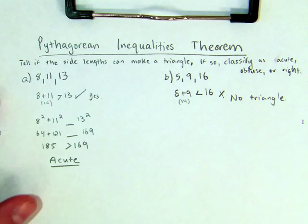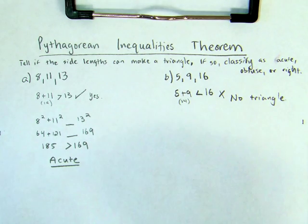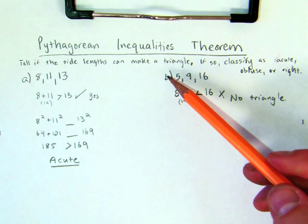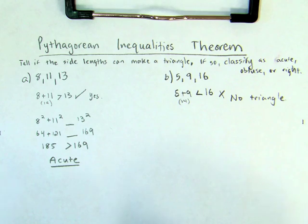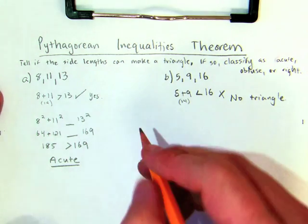And that is an example of how we use the Pythagorean inequalities theorem to determine things about triangles. Just so you know, I'm going to give you guys a little bit of help here.